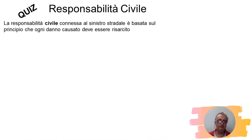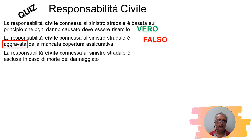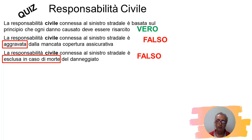Vediamo alcune affermazioni di quiz: 'La responsabilità civile connessa a sinistro stradale è basata sul principio che ogni danno causato deve essere risarcito' – verissimo. 'È aggravata dalla mancanza di copertura assicurativa' – falso, il danno rimane sempre lo stesso. 'È esclusa in caso di morte' – assolutamente falso. La responsabilità civile mi obbliga a risarcire i danni a veicoli, persone e cose, anche in caso di morte. Anzi, in caso di morte scatta anche la responsabilità penale.